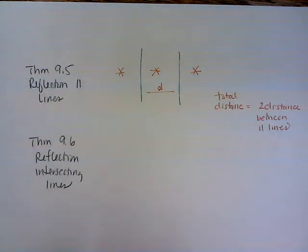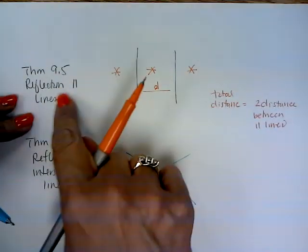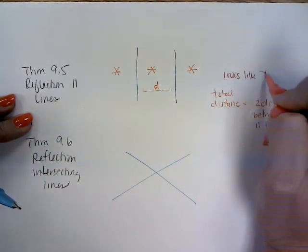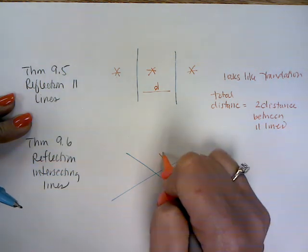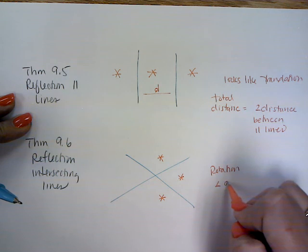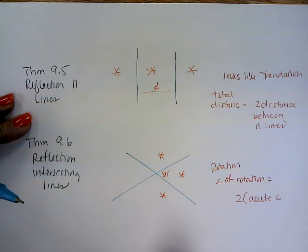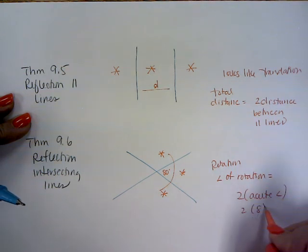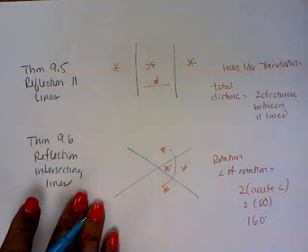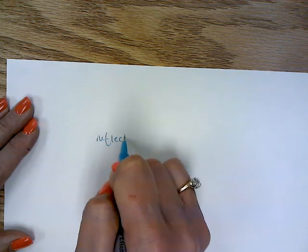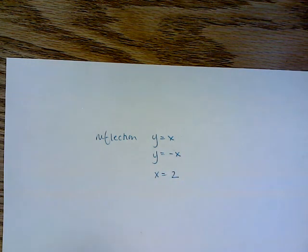Which is the same thing that this theorem 9.6 is saying. Now I have intersecting lines, and this is going to look like, sorry, backing up, 9.5, it looks like a translation. Here I have an image, I'm reflecting it here, and then I'm reflecting it again. So it looks like a rotation, and the angle of rotation equals 2 times the acute angle. So if I tell you that this angle is 80 degrees, then the whole rotation is 2 times the acute angle, which is then 160 degrees. It's knowing those two theorems. You also have to know the reflection for y equals x, y equals negative x, and like an x equals 2. All of those types of reflections you'll probably have to do.